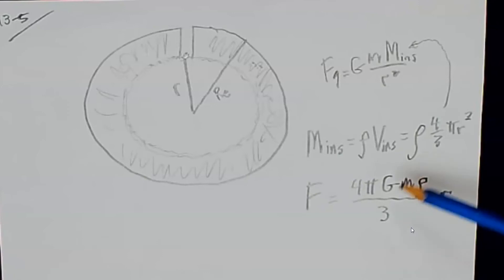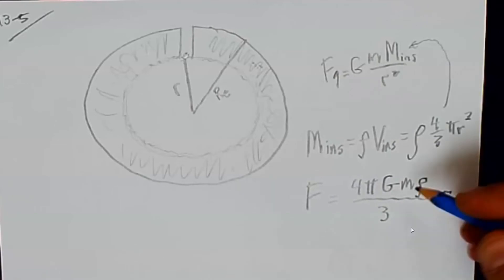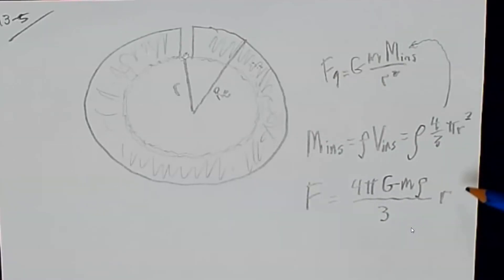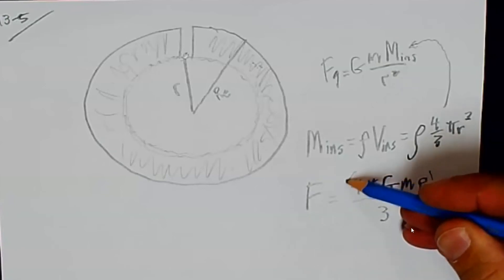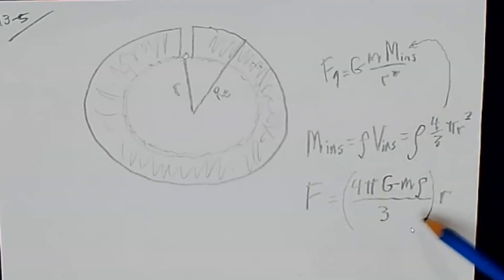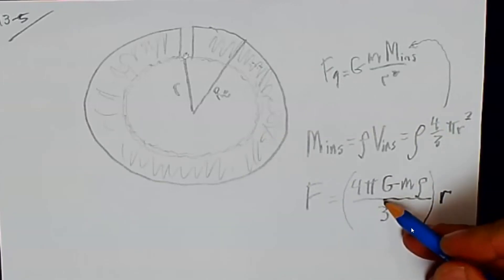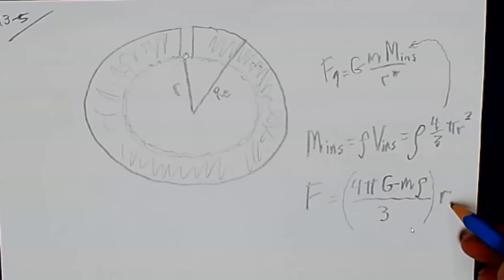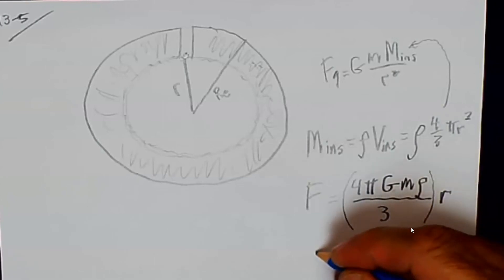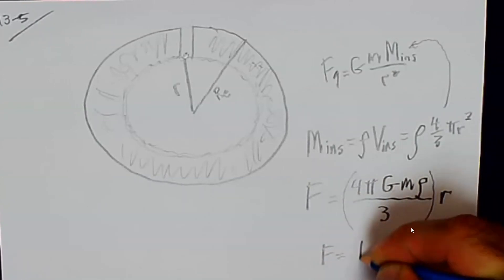I know my mass, and we know the gravitational constant. So now that's something I can solve. Now if you notice, for planet Earth, or for any planet where the density is uniform, this part right here can be treated as a constant. So if you look at that, F times a constant times a distance, that's like Hooke's law, right? F equals kx.